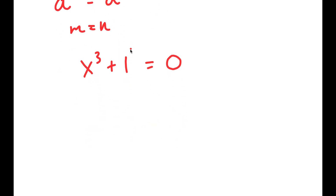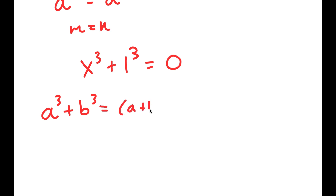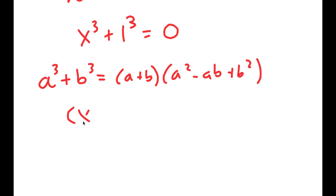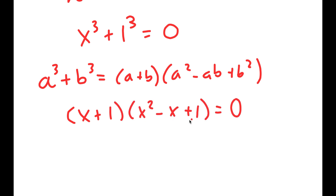To solve this, I'll use the algebraic property for sum of cubes: a cubed plus b cubed equals (a + b)(a² − ab + b²). So x cubed plus 1 equals (x + 1)(x² − x + 1) is equal to 0.